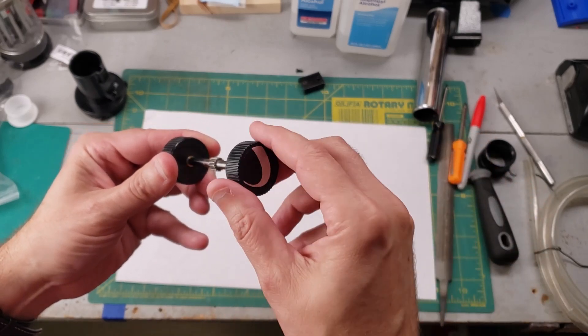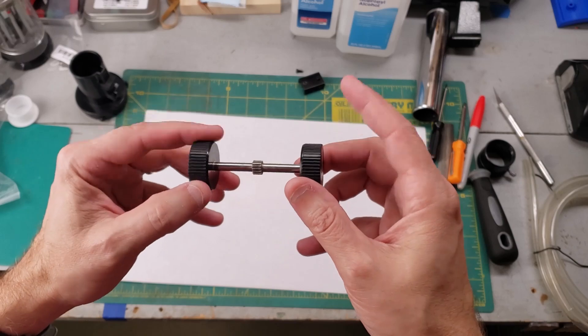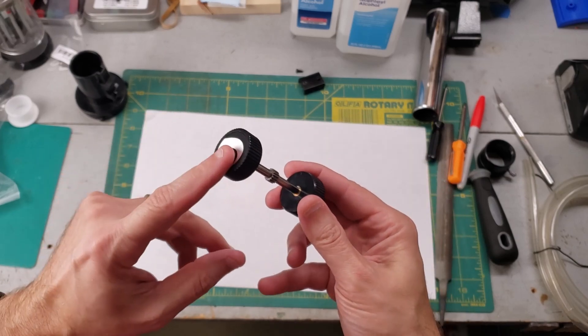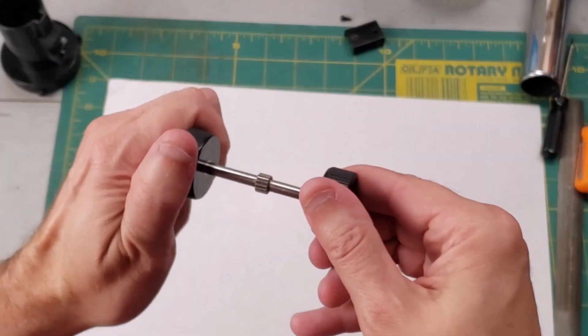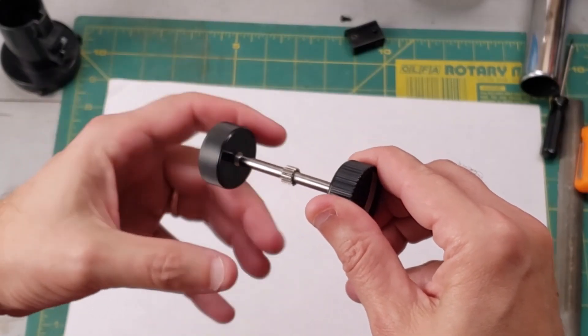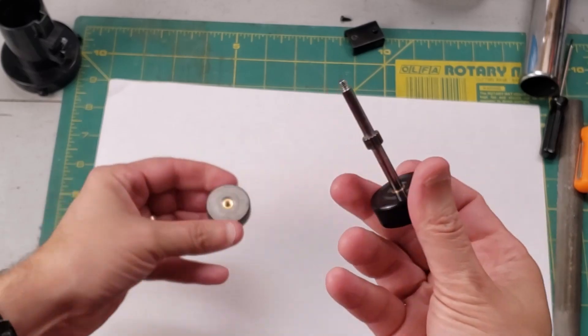We need to get access to this pinion gear, so I'm going to need to remove one of these knobs. Now it's not always obvious how to get these off. Sometimes there's a retaining screw hidden under one of these labels, or sometimes in this case it's just screwed on. So there we go.